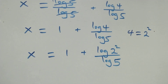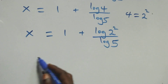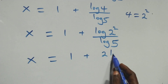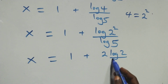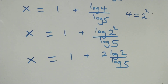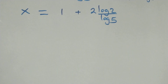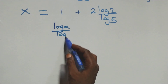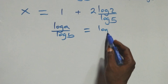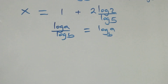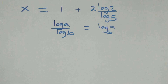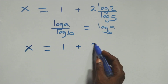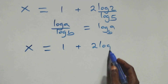Here we apply the power rule of logarithm, then we apply the change of base. When we have log a over log b, this equals to log a to base b. Therefore we have x equals to 1 plus 2 log 2 base 5.